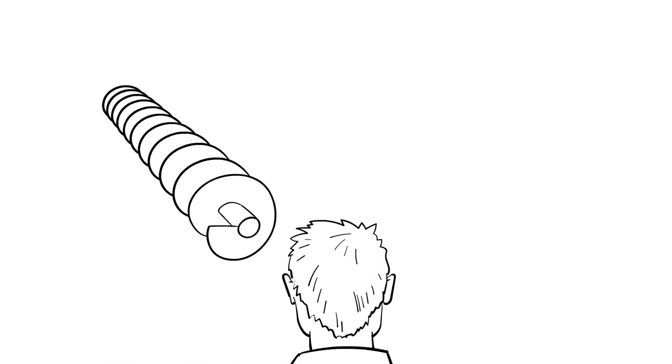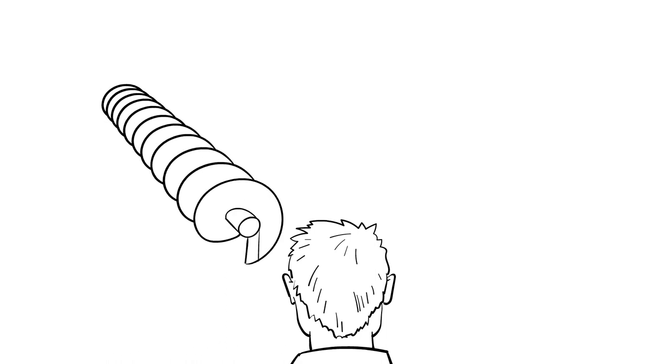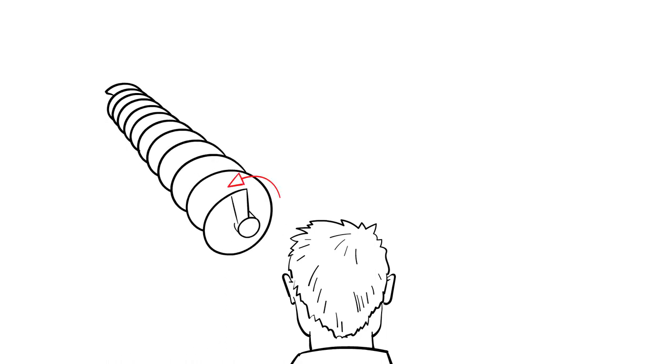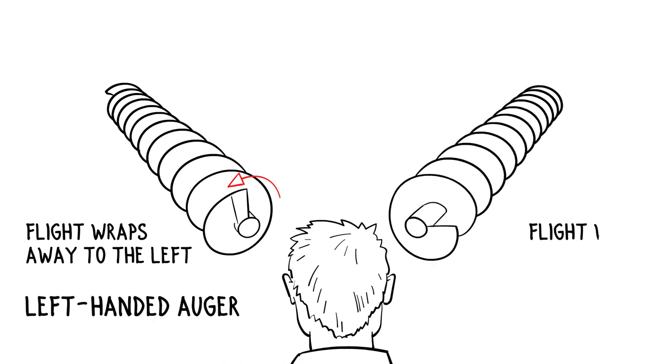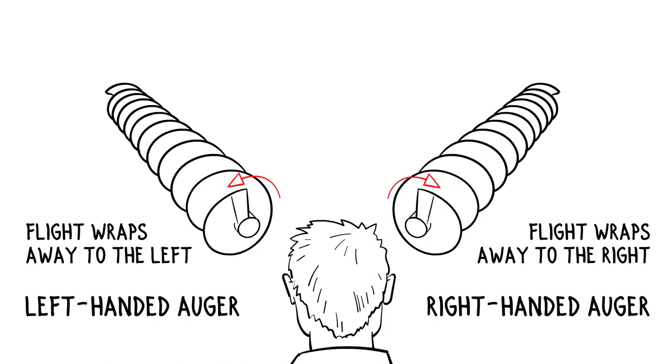Position yourself at either end of the auger. Rotate the auger until the end of the flighting is pointing directly up. If the flighting wraps away and to the left, you have a left-hand auger. If the flighting wraps away and to the right, you have a right-hand auger.